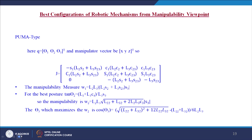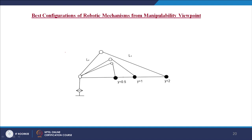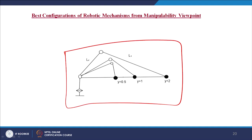The PUMA manipulator has 6 degrees of freedom, all revolute joints. The best configurations are determined by varying L3 = γ·L2 for γ = 0.5, 1, and 2, giving three optimal configurations based on the manipulability measure.